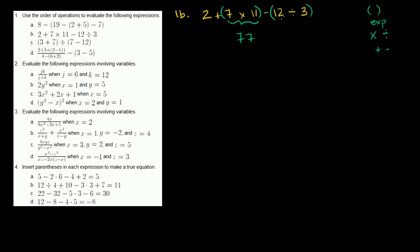And 12 divided by 3 is 4. The rest of the problem is 2 plus 77 minus 4. Since everything is addition or subtraction, we go left to right: 2 plus 77 is 79, minus 4, which equals 75. So 1b is equal to 75.